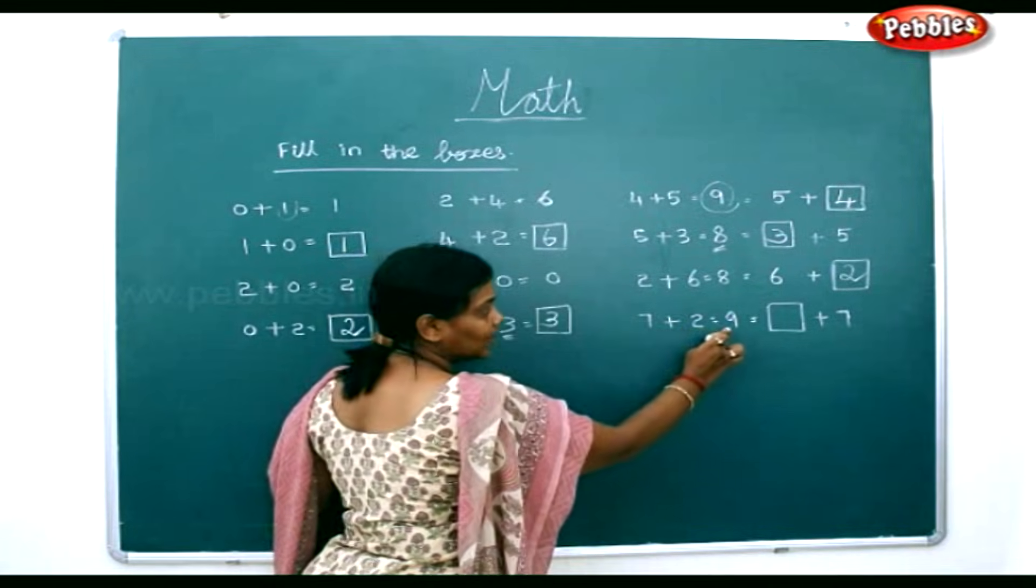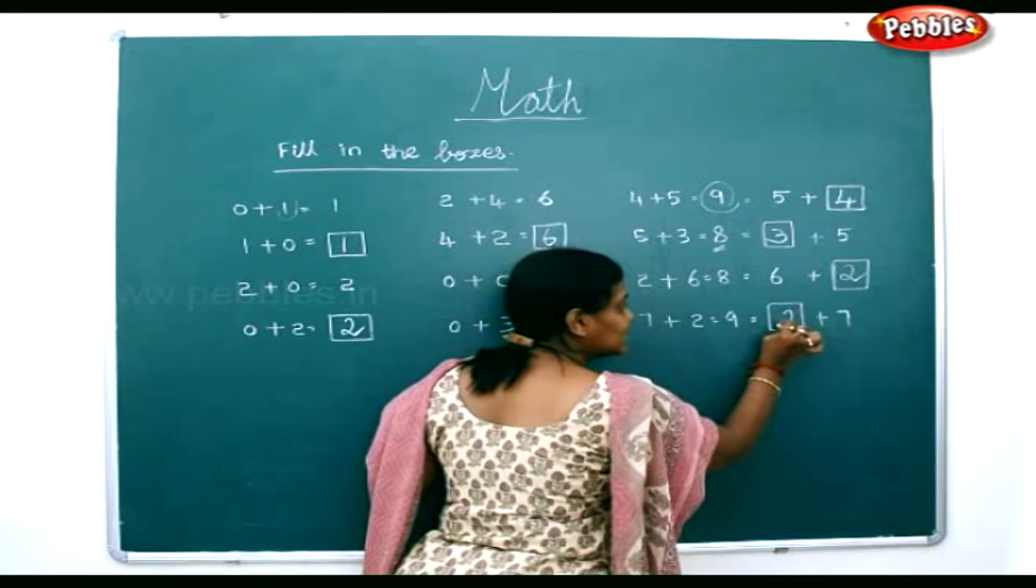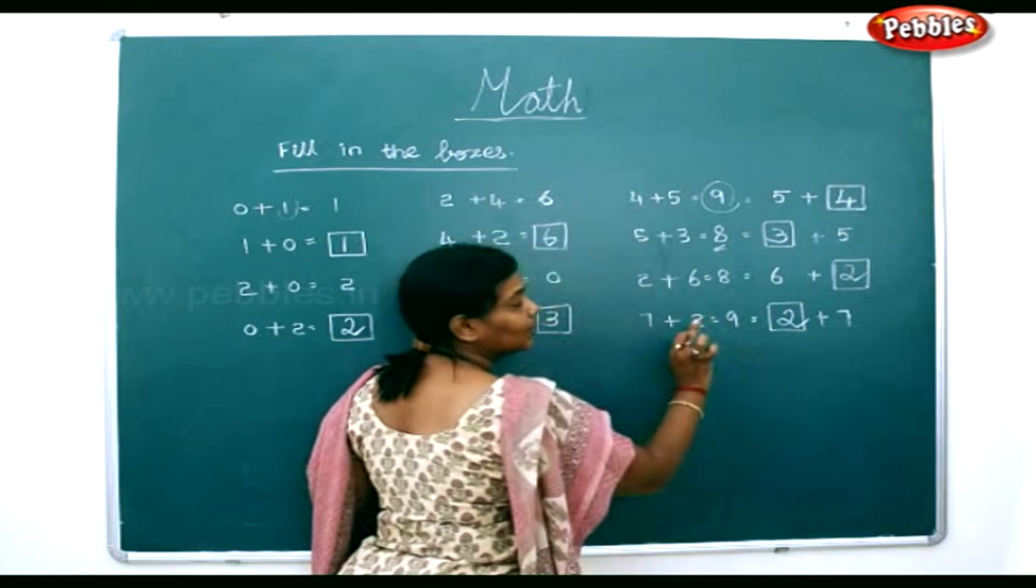7 plus 2 is equal to 9. So 2 plus 7 also will be equal to 9.